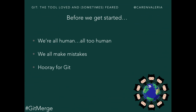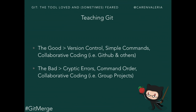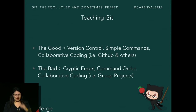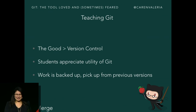That's definitely what we're going to cover. The good will be version control, simple commands relatively, collaborative coding - i.e. GitHub, Bitbucket, and other services. The bad are going to be the cryptic errors, the command order sometimes, and collaborative coding, i.e. group projects. Those are the pros and cons we'll be going through in the following slides.